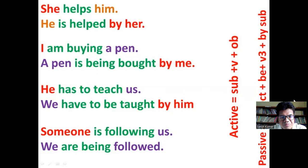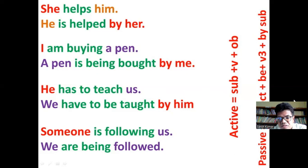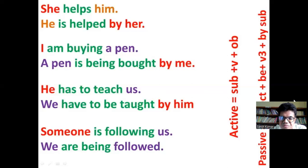'Someone is following us' → 'We are being followed by someone.' Here, 'someone' is written out; we can also make the passive sentence without describing the object at the end if the object refers to any common or unspecified source. The structure of an active sentence is: Subject + Verb, and passive is: Object + auxiliary + past participle of verb + by + subject.